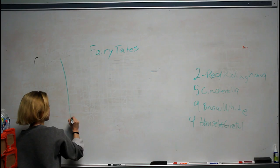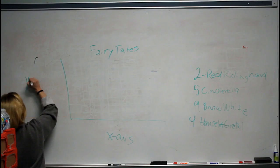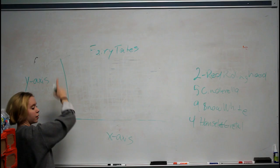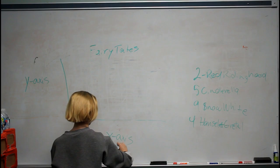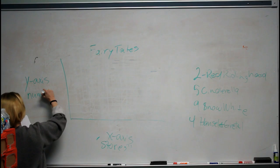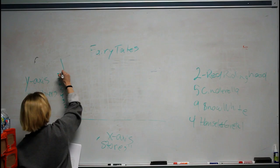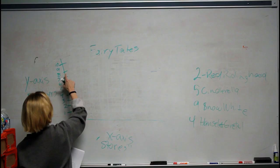Next, our axes. The one that goes across is our X-axis and the one going up and down is our Y-axis. Starting with our X-axis, we're going to call it Stories. Then we label our Y-axis — we'll call it Numbers. Then we make our scale from 1 to 10.